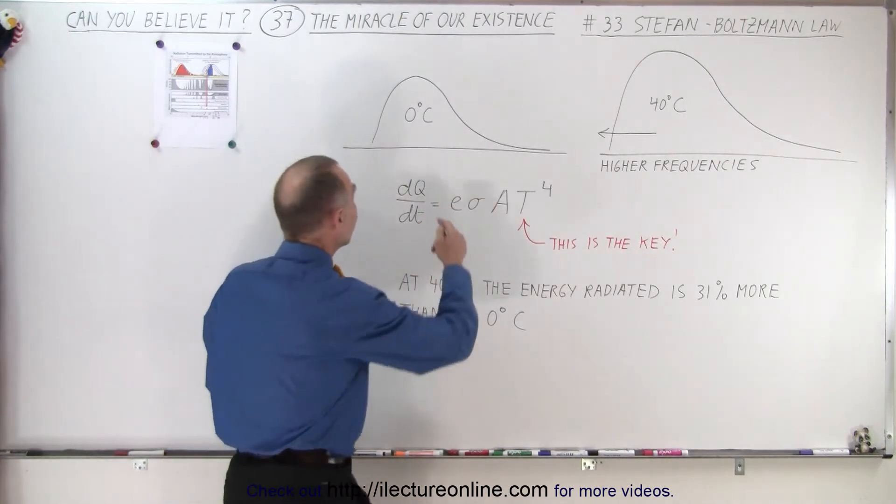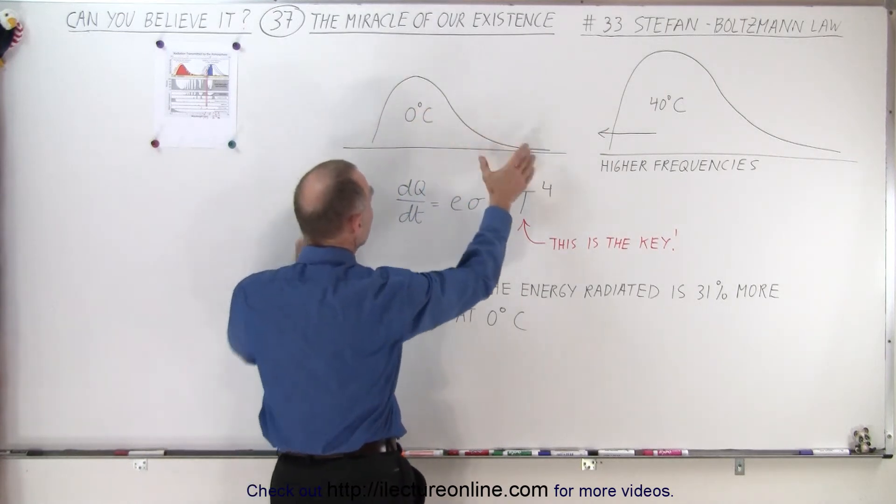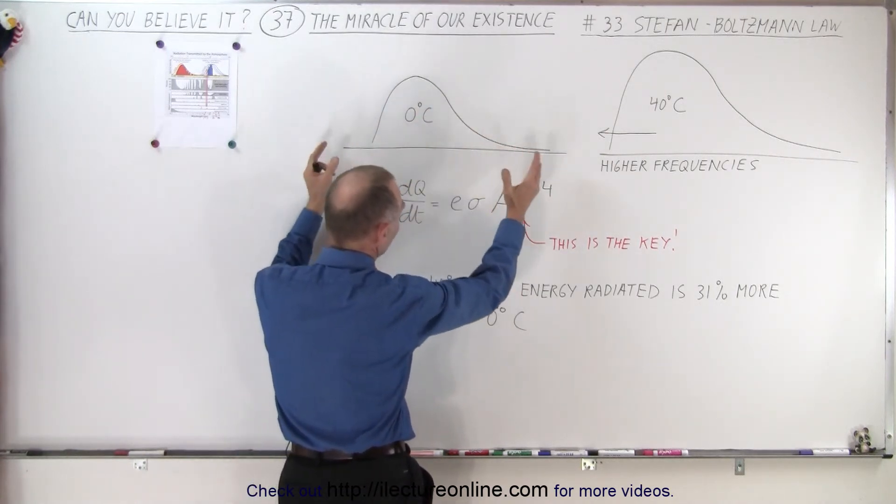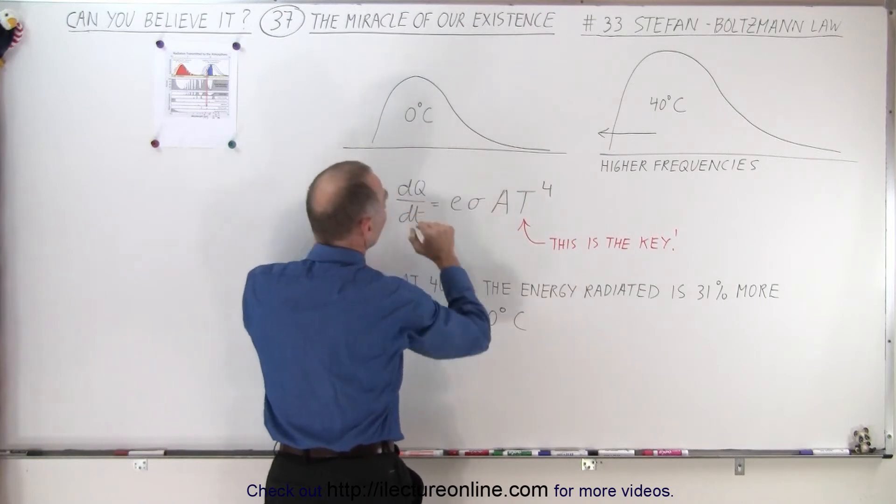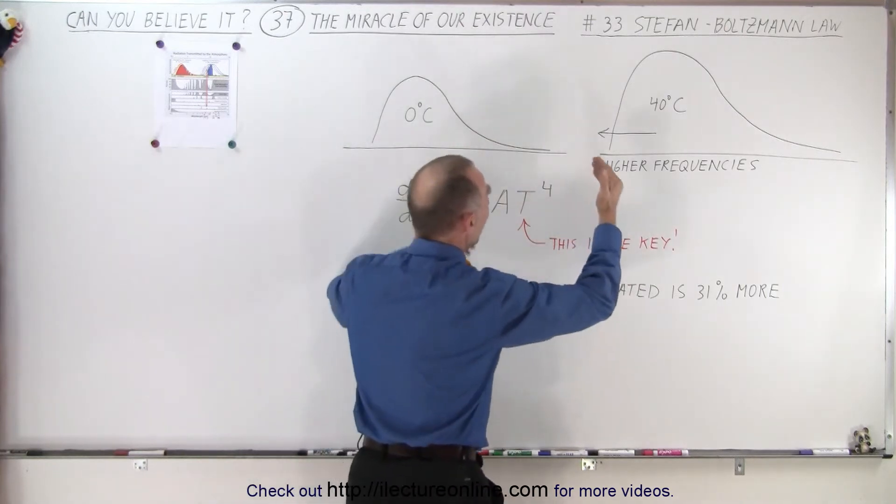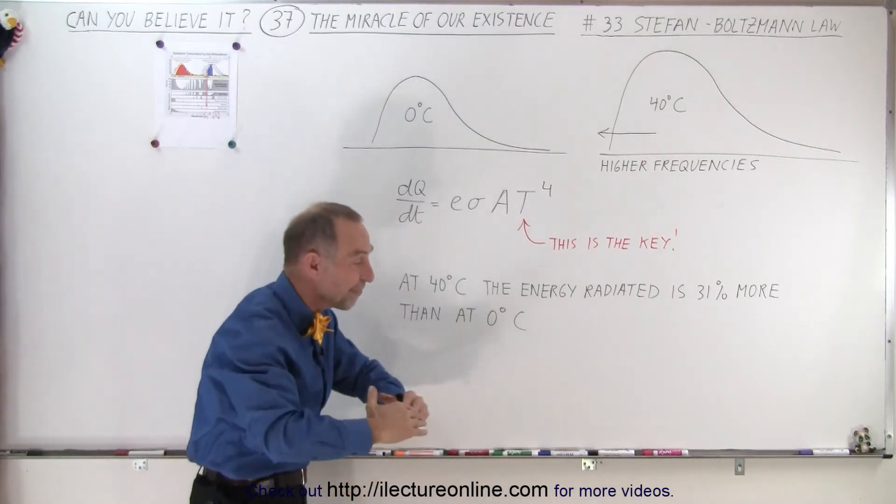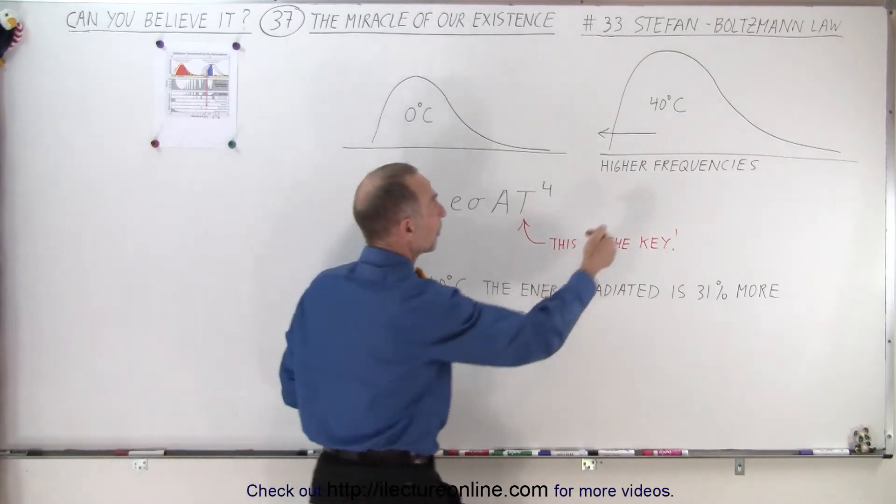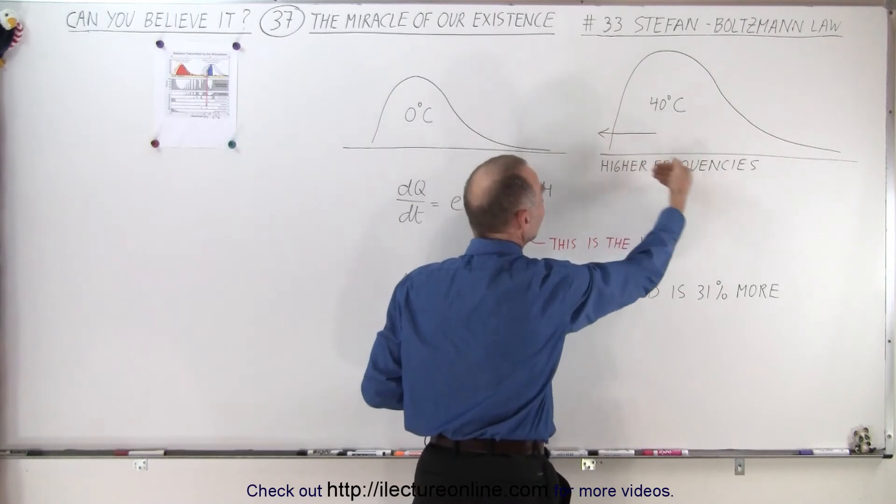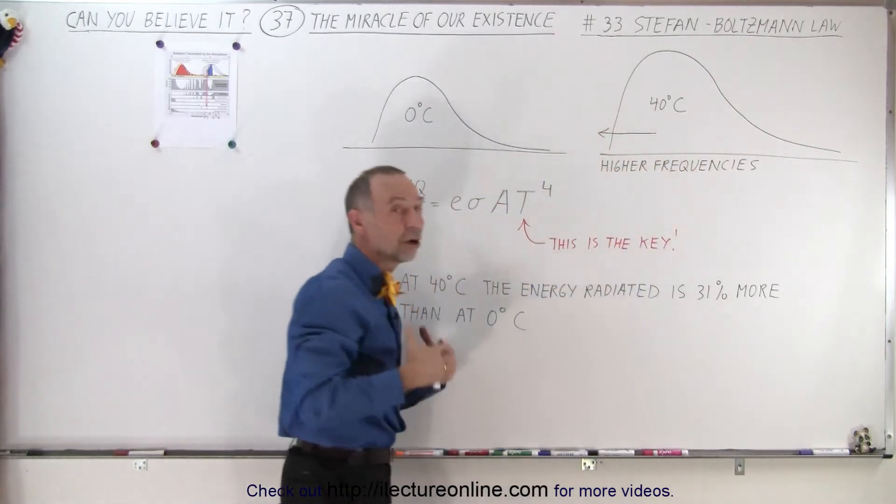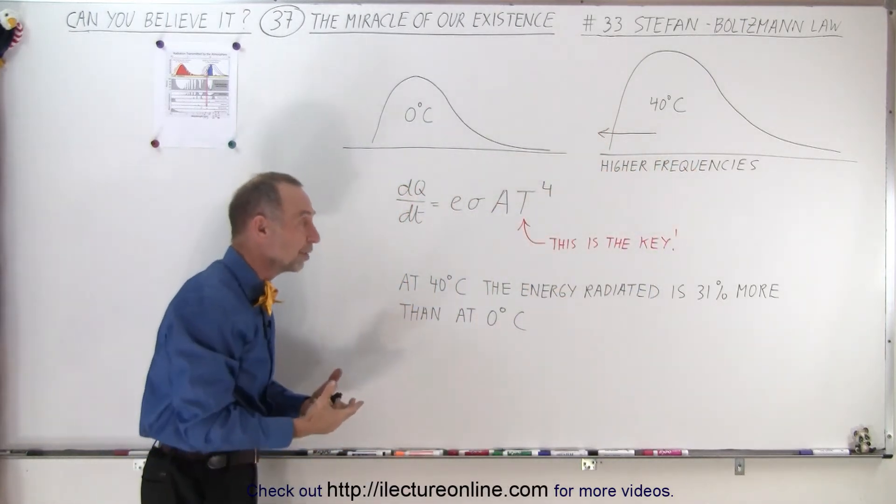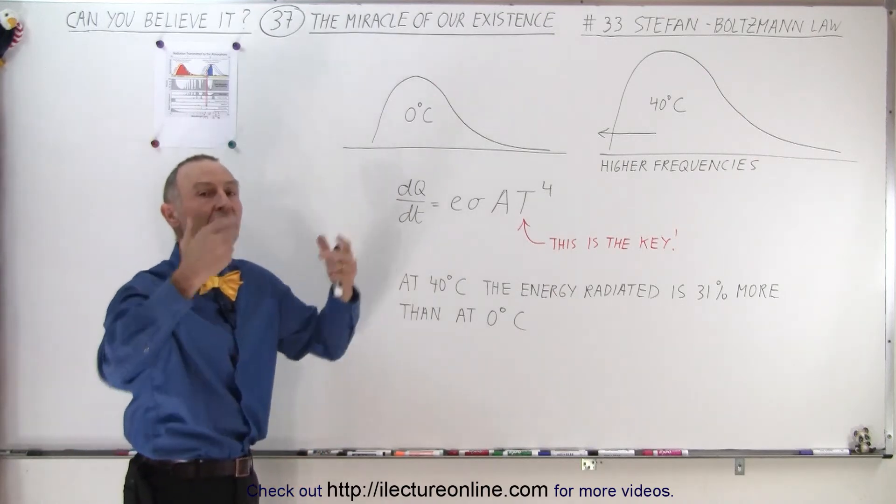So what happens is, this is what we call the black-body radiation curve of a piece of surface of the Earth at 0 degrees Celsius. And as the temperature goes up, the amount of radiation coming from the same portion of the surface vastly increases due to that increased temperature. Plus, the curve moves to the left into the higher frequency range, causing that enormous increase in energy being re-released into space.